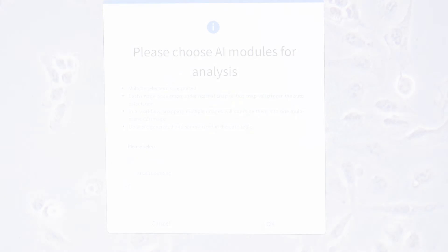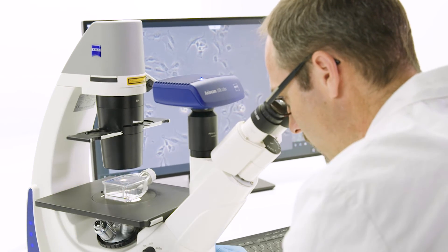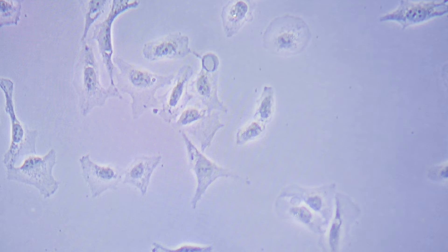Here's how it works. Start by selecting the cell counting module in Zeiss LabScope. Now you're ready to focus your sample.